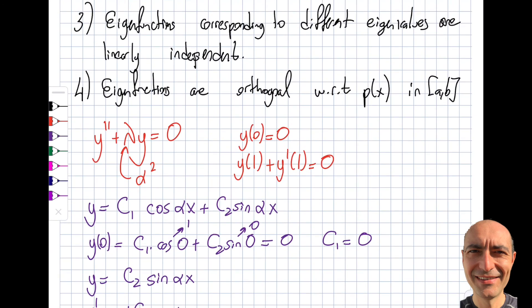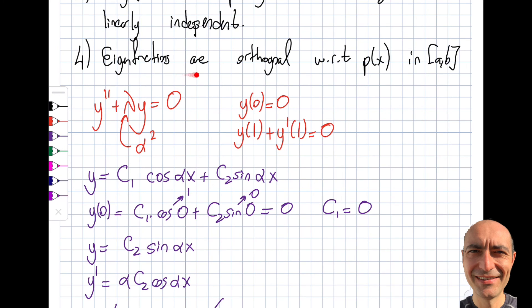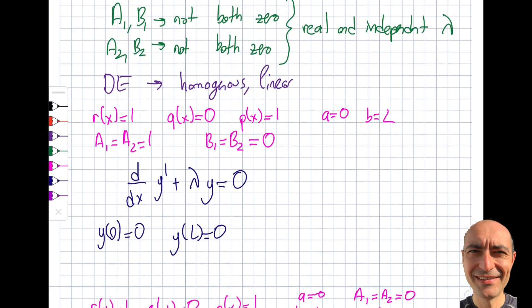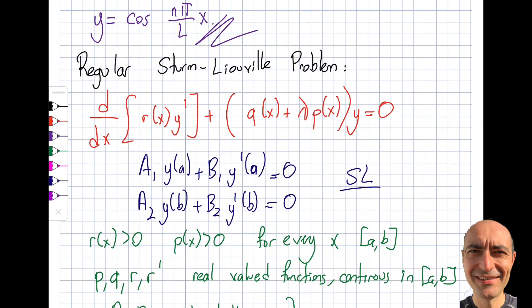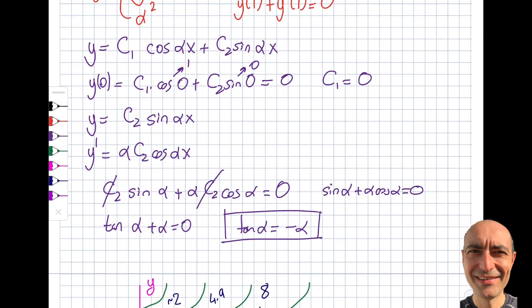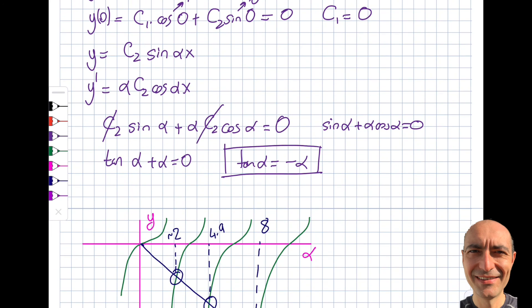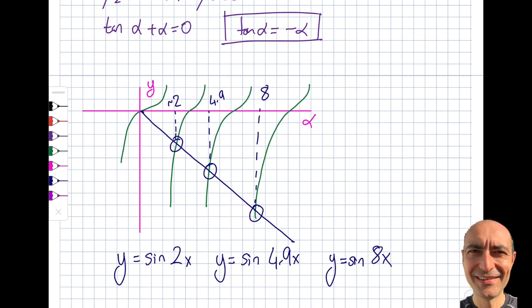To highlight the orthogonality property: p(x) = 1 in this problem, and the weight λ = α² term appears as 1 in the equation. Therefore, the set of sine eigenfunctions is orthogonal with respect to the weight function p(x) = 1 on the interval [0, 1]. That wraps it up for Sturm-Liouville problems — next we move on to partial differential equations.